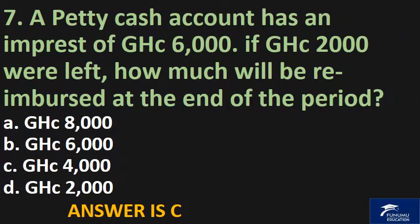A petty cash account has an imprest of 6,000 Ghanaian cedis. If 2,000 Ghanaian cedis were left, how much will be reimbursed at the end of the period? A. 8,000 Ghanaian cedis, B. 6,000 Ghanaian cedis, C. 4,000 Ghanaian cedis, D. 2,000 Ghanaian cedis. The answer is C.